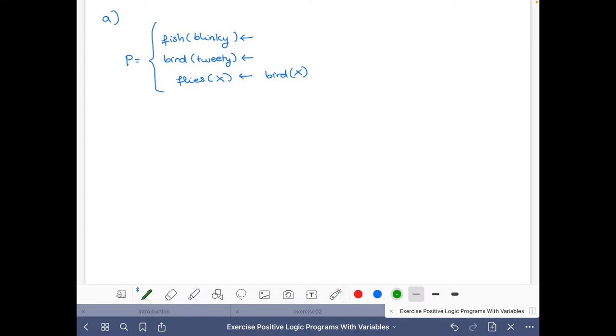Now, first we have to determine the Herbrand universe T. The Herbrand universe is the set of ground terms that can be built using the constants and the function symbols that occur in the program. In this part of the exercise, as well as in the others, there will be no function symbols.